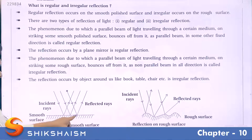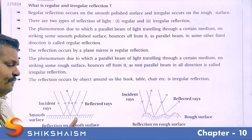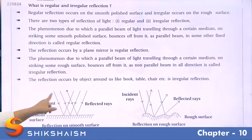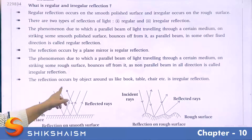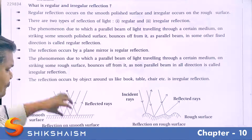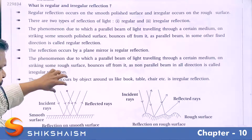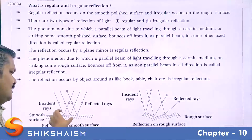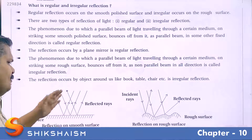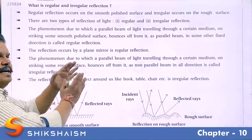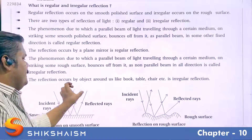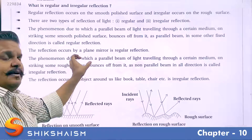In the diagram, we have a smooth and shiny surface. When light hits this smooth and shiny surface, the reflected rays are also parallel and they are traveling in the same direction.